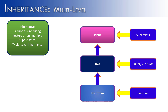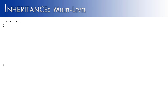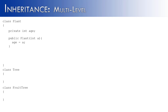Let's see how this works in code. First, we create our plant class, then our tree class, and finally our fruit tree class. Our plant class has an age. We create a constructor to initialize age, and we have a getter to return what the age is.